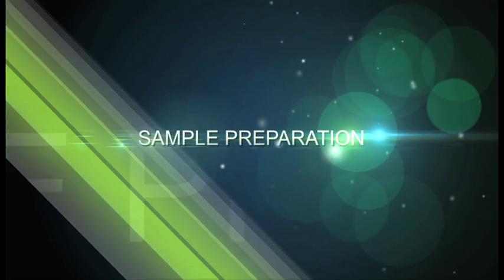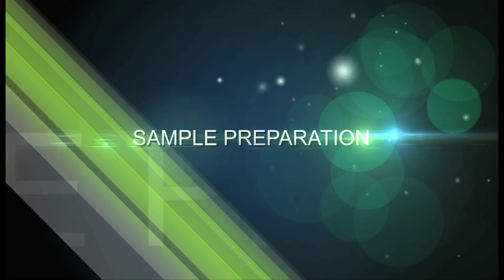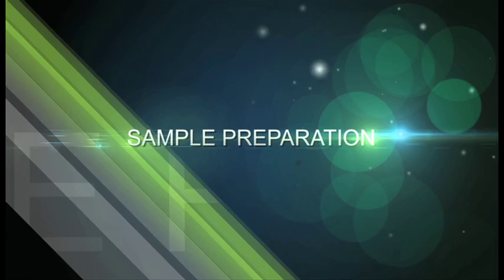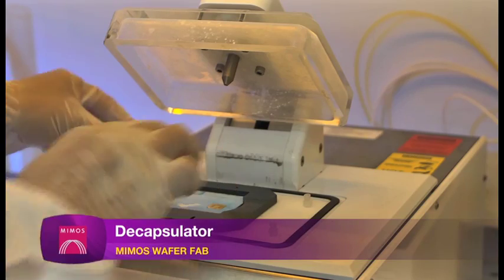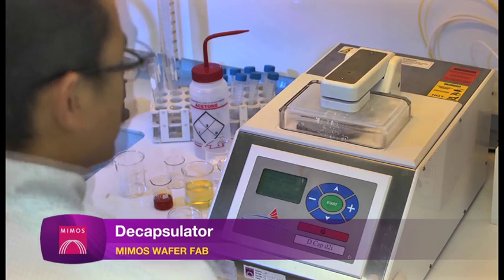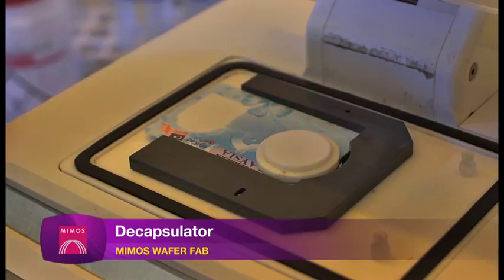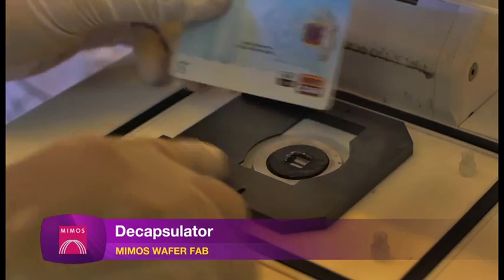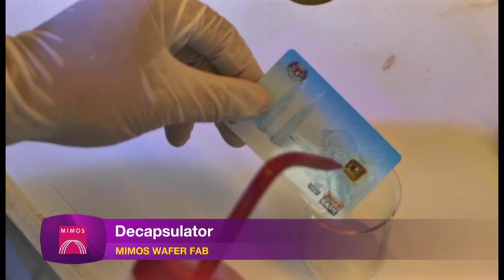Sample preparation process is important to expose the internal conditions of the IC. MIMOS FA Lab is equipped with various types of sample preparation tools. The decapsulator is used to remove the encapsulant while preserving the integrity of the die and also bond wires.